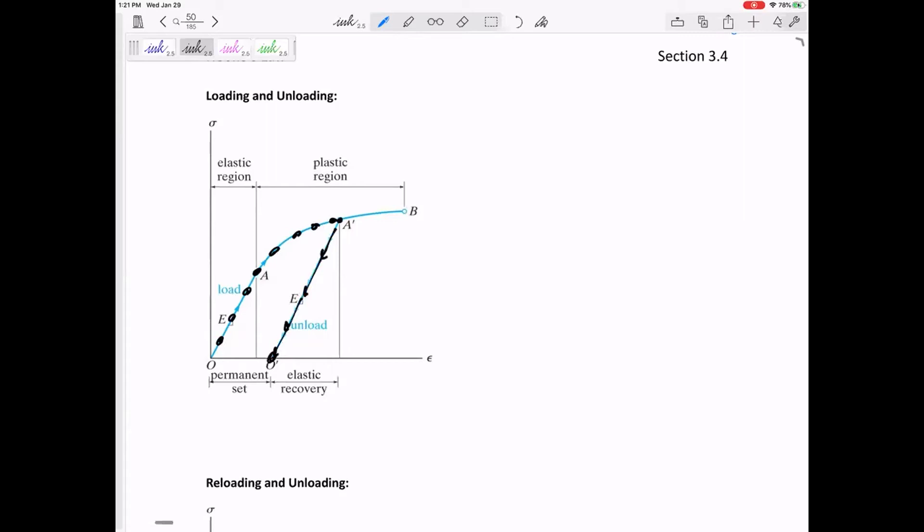And so now we're at this point O prime, we'll call it. So this distance that you end up with, that is the permanent set. That is a permanent set.